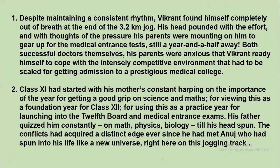The two characters are Vikrant and Anuj. In the first paragraph, we see Vikrant jogging. Despite maintaining a consistent rhythm, Vikrant found himself completely out of breath at the end of a 3.2-kilometer jog. He was tired not just from jogging but because his head was filled with the pressure of his parents' thoughts.